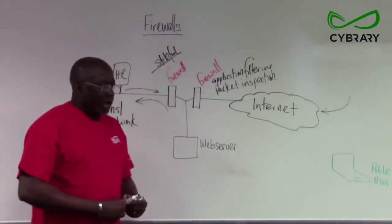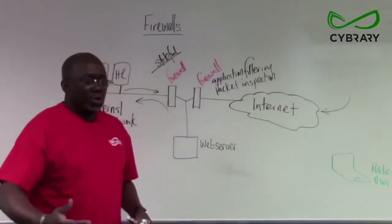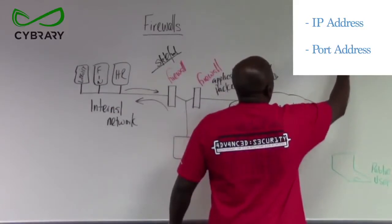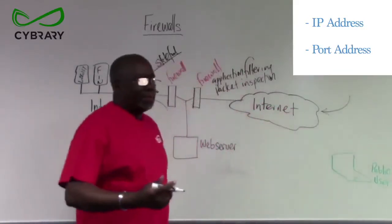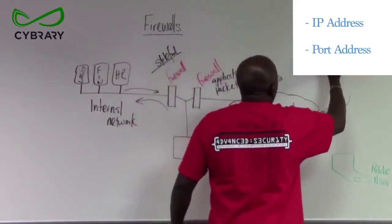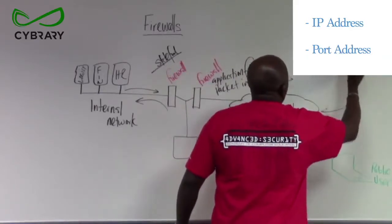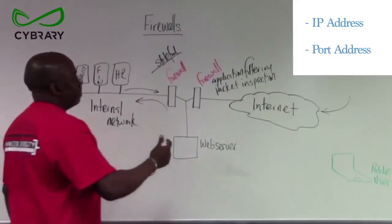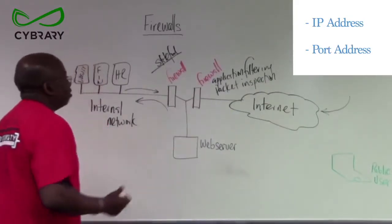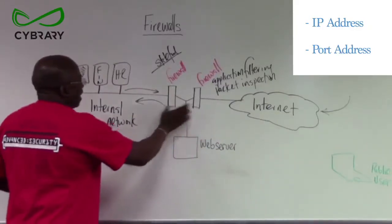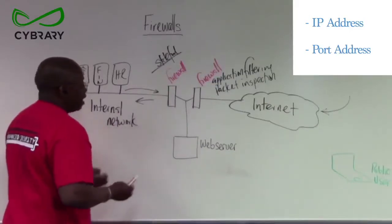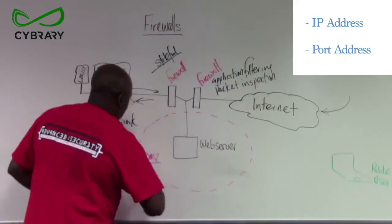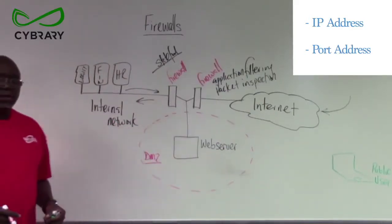Firewalls work by rules — either to allow traffic or to block traffic. We can specify the traffic they allow or block by IP address or by port address. Our firewalls work based on the rules that we create. In this scenario, these firewalls are used back-to-back, and this allows us to create a DMZ — a demilitarized zone.